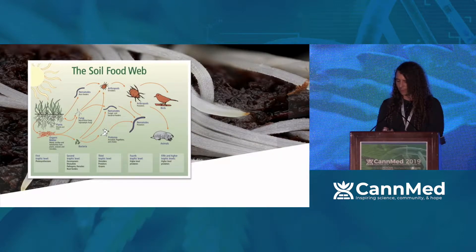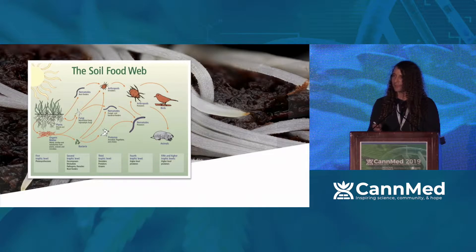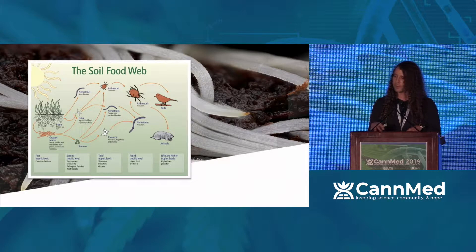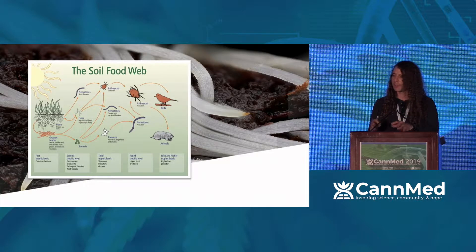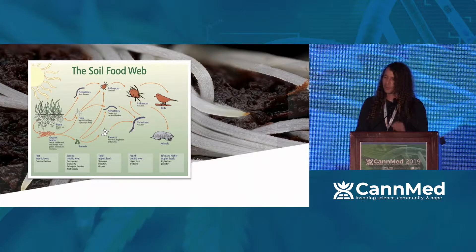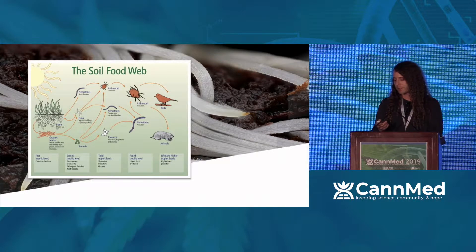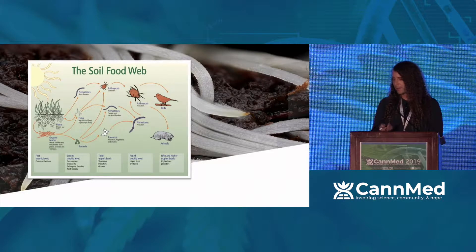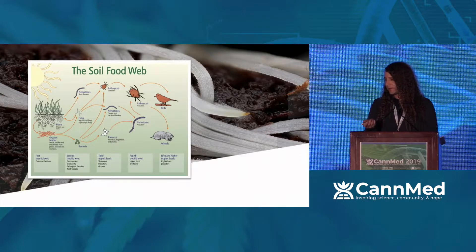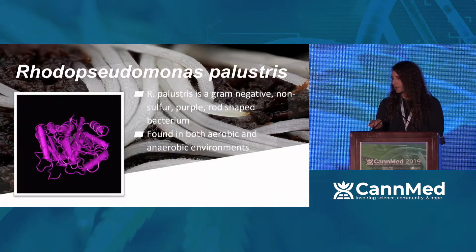Right there at the bacterial level, bacteria are able to digest and make more available all of these amazing phosphates and nutrient supplies that are already in your soil. The bacteria is able to break that down and deliver it to your rhizosphere, to the roots of your plant. That is amazingly interesting. I get introduced to this concept, and here we are.